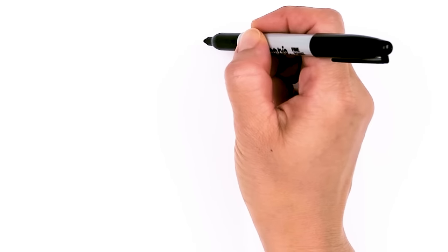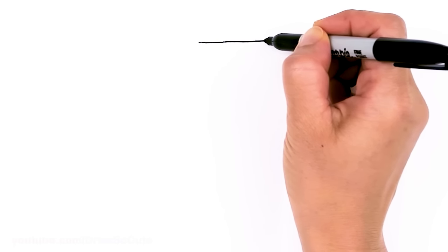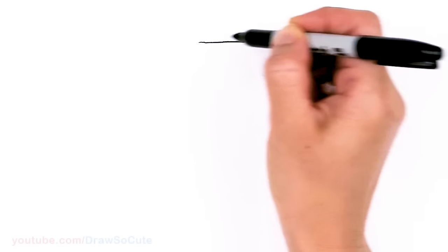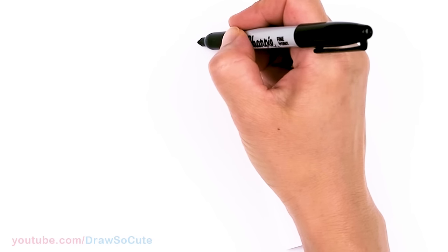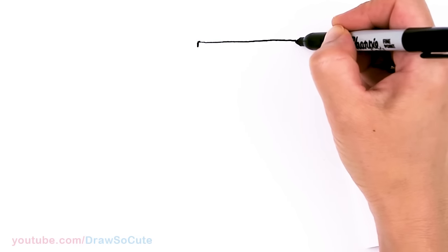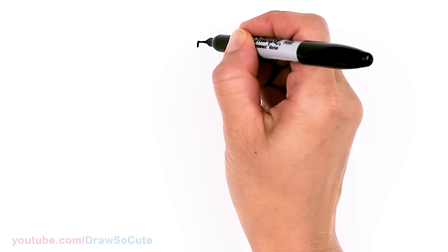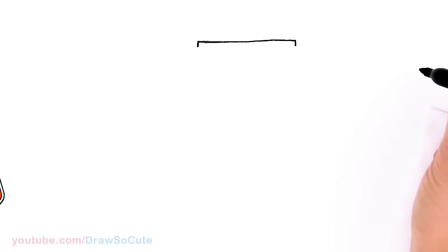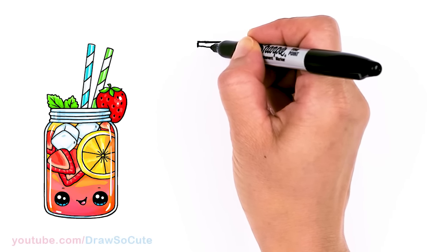To draw this yummy drink, let's first start by drawing the neck of our jar. So I'm going to come right here and start with a straight line across. This line will just determine how wide my jar is. We're going to straight line in, and then we're going to come down with another straight line. Not too long, just because we're just drawing the neck of our jar here.